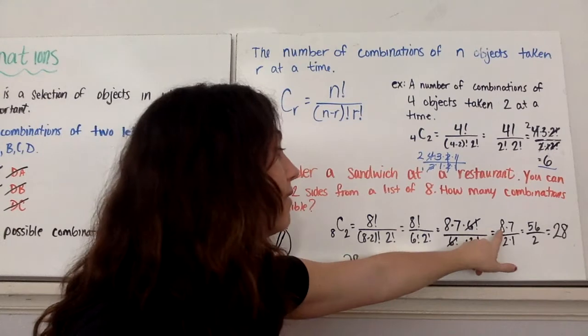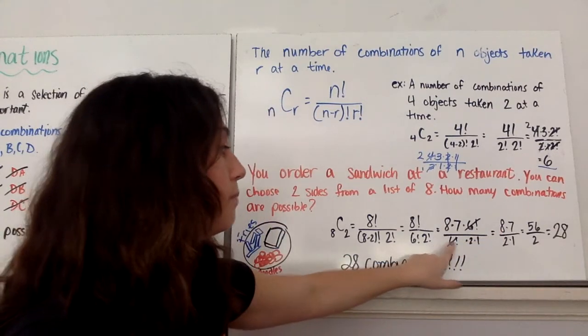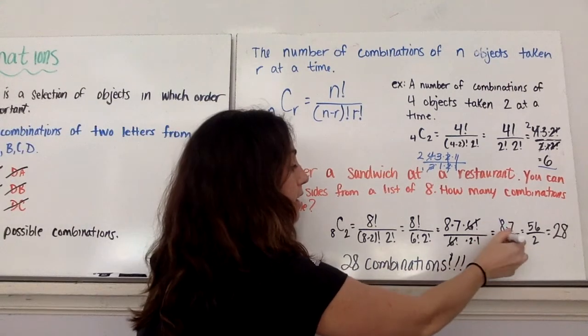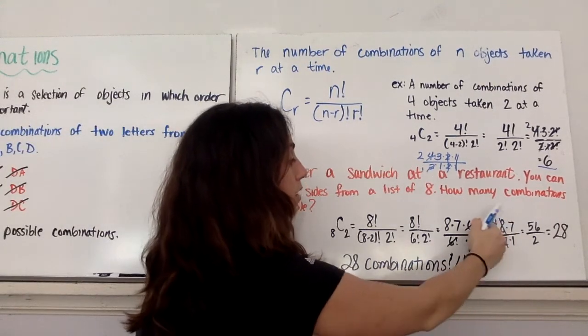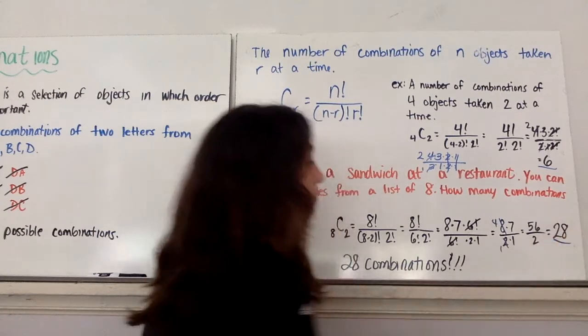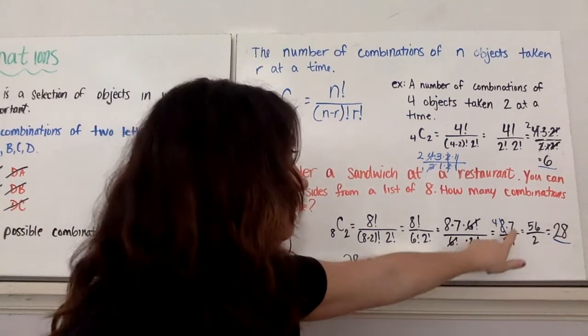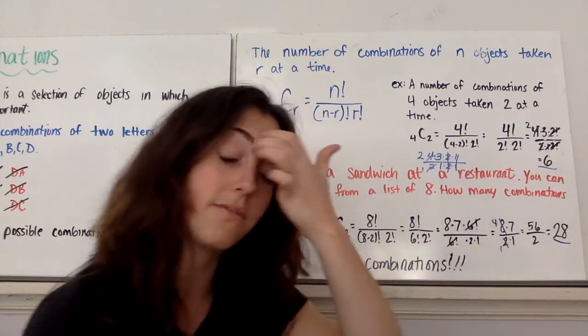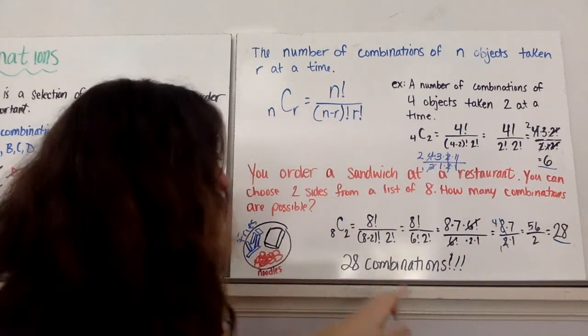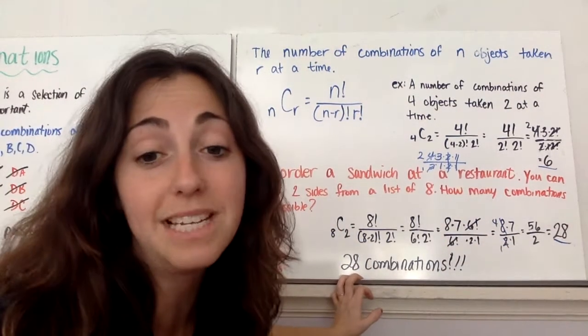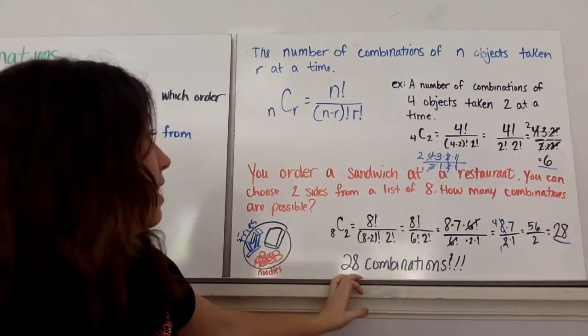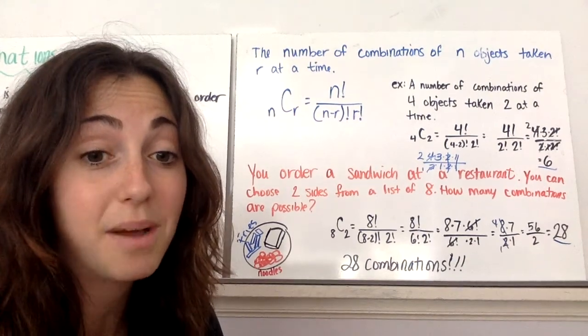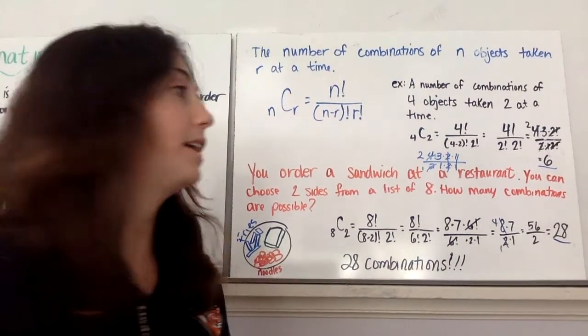So I have 8 times 7 in the numerator. And it's a denominator of 2 times 1. Now, you could do some canceling where you have 8 divided by 2, and that's 4, and 4 times 7 is 28. Or you just multiply straight across like I did. 8 times 7 is 56, and 2 times 1 is 2. 56 divided by 2 is 28. So that means there are 28 combinations you could have by ordering a sandwich at this restaurant. Wow. 28 combinations. That's a lot. All right. Cool.